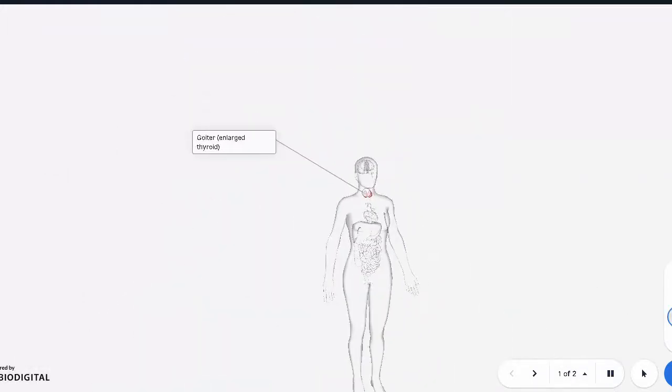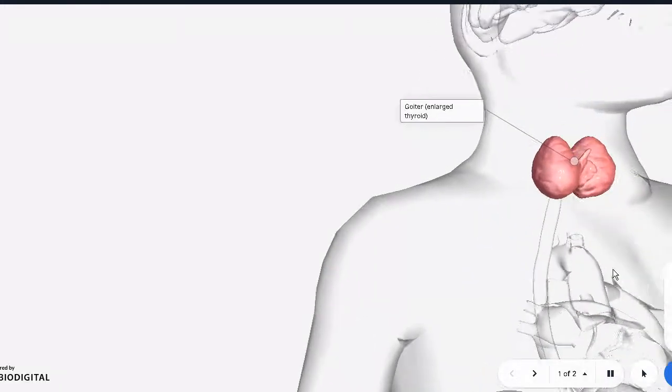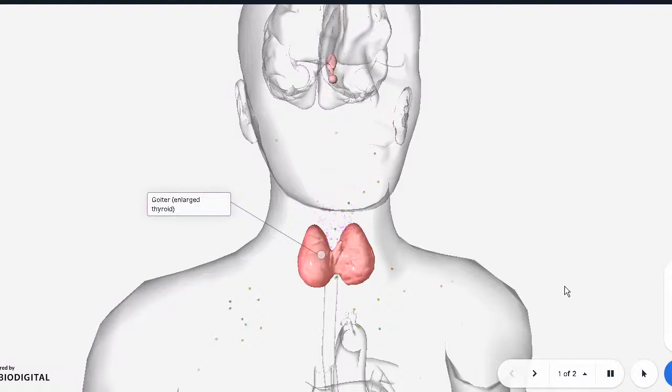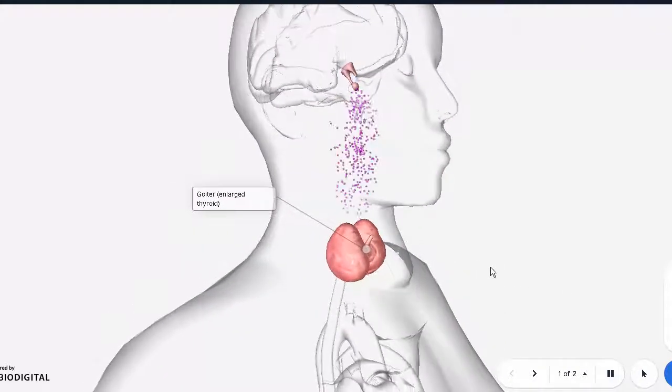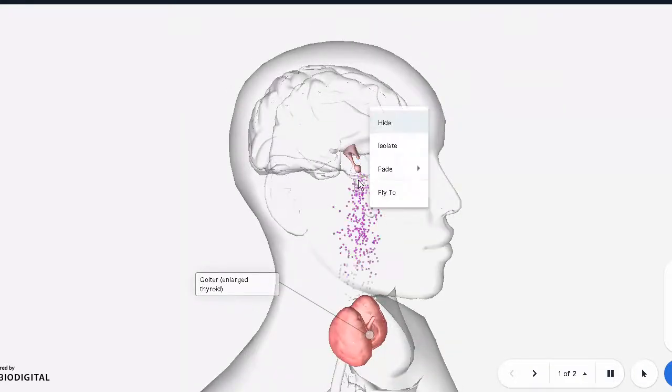This is a characteristic scenario of Hashimoto's thyroiditis. Now you must understand that this thing happens in phases. The first phase basically is the autoimmune attack of the thyroid. This whole disease is actually an autoimmune disease where the body is attacking the thyroid gland.